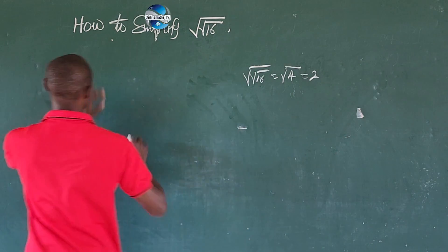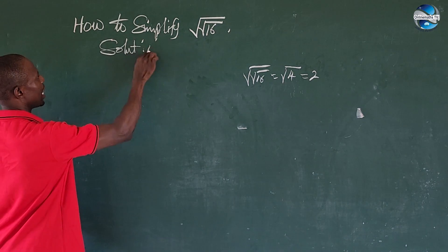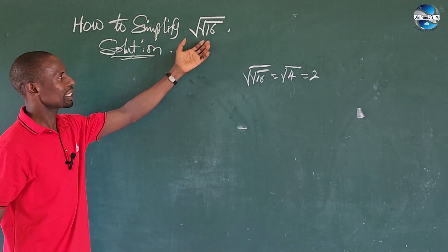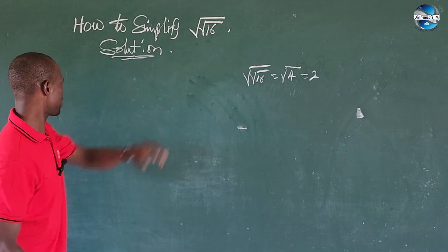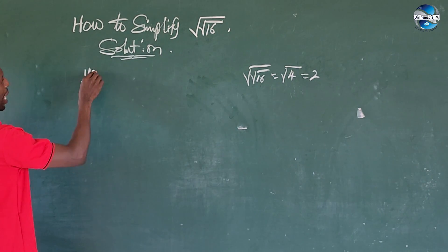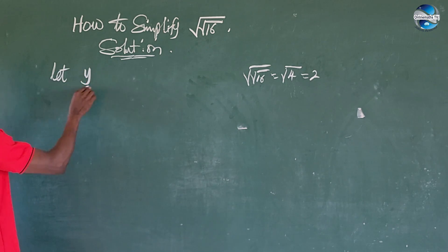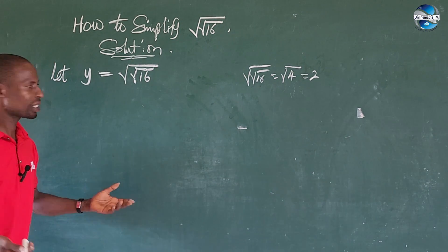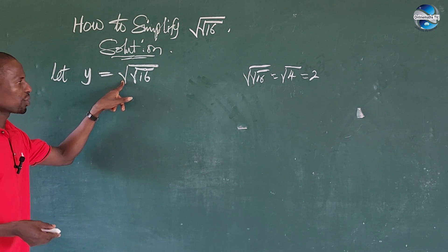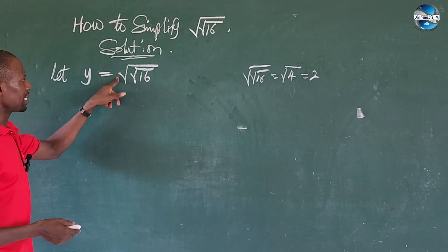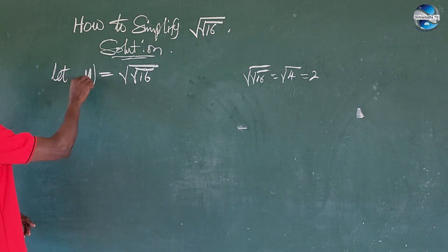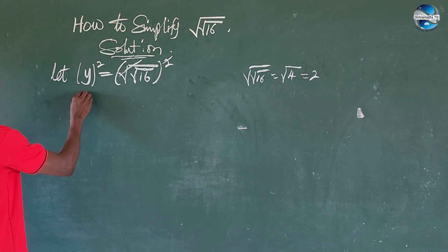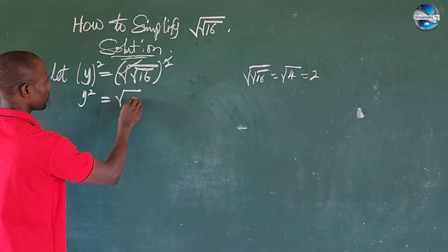So let's go to the board and take our solution without much waste of time. We can say let y be equal to whatever we have here — so let y be equal to the square root of the square root of 16. The first thing I'm going to do is eliminate this outer radical by taking the square of both sides of the equation, which gives us y squared is equal to the square root of 16.